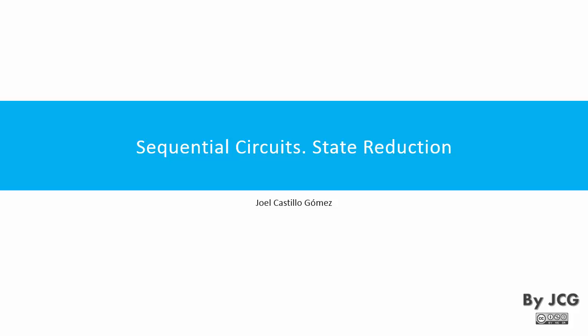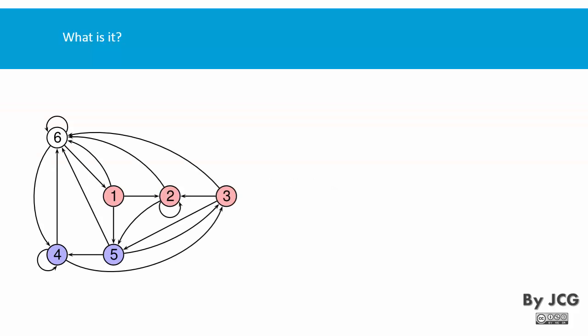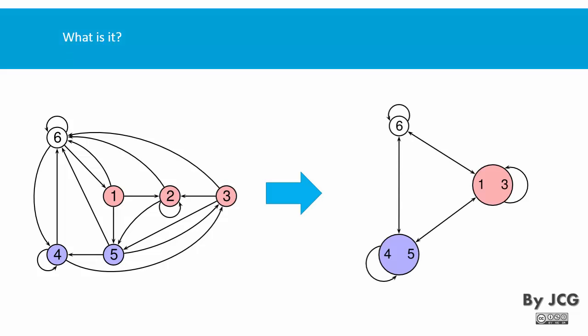In this video we will talk about state reduction techniques. We have a state diagram with six states, and what happens if you can go from this to this? Both state diagrams do exactly the same work. When you have fewer states you need less memory, hence the circuit is going to be smaller.